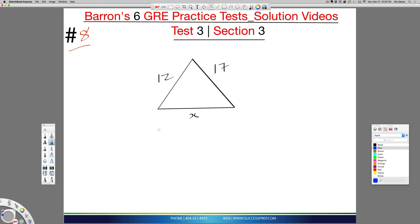What you can use is a rule that says if you know these two sides, the third side is between the sum of these two, which is 12 plus 17, and the difference of these two, which is 17 minus 12.